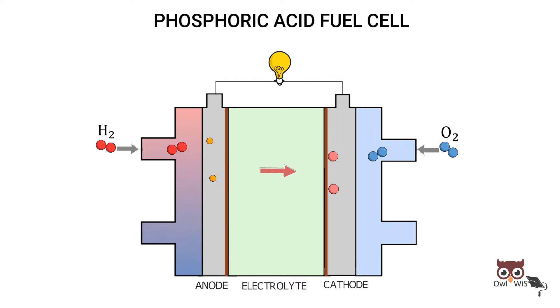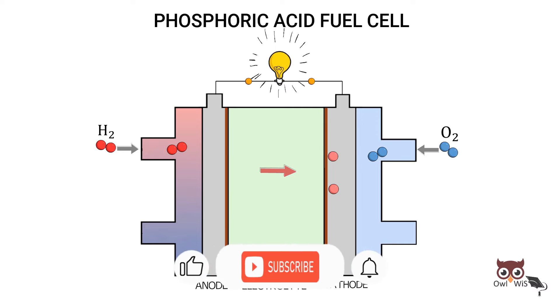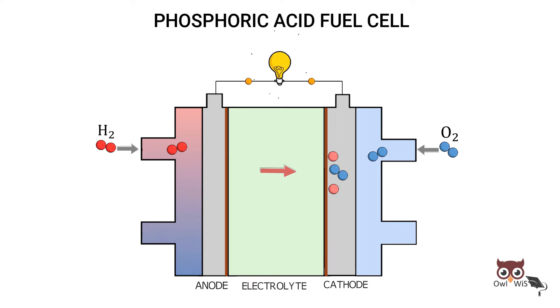Electrons flow through external circuit to the cathode side. The flow of electrons through the external circuit produces electric current. At the air electrode, the hydrogen ions combine with oxygen in presence of electrons to produce water.